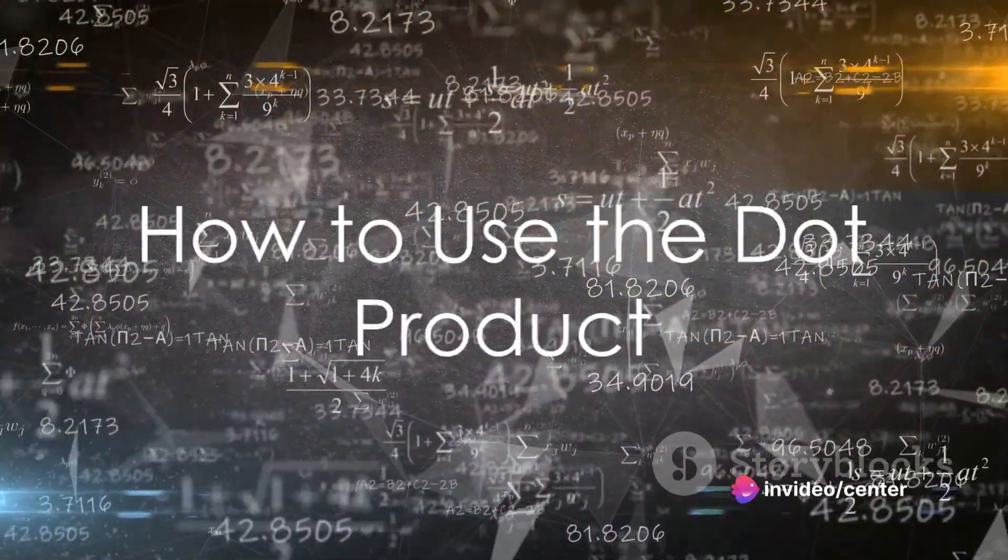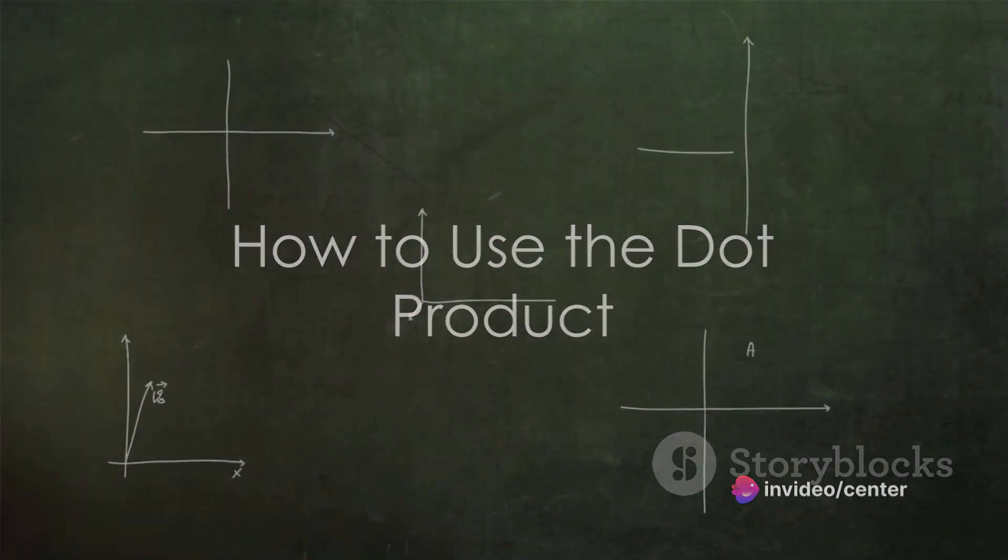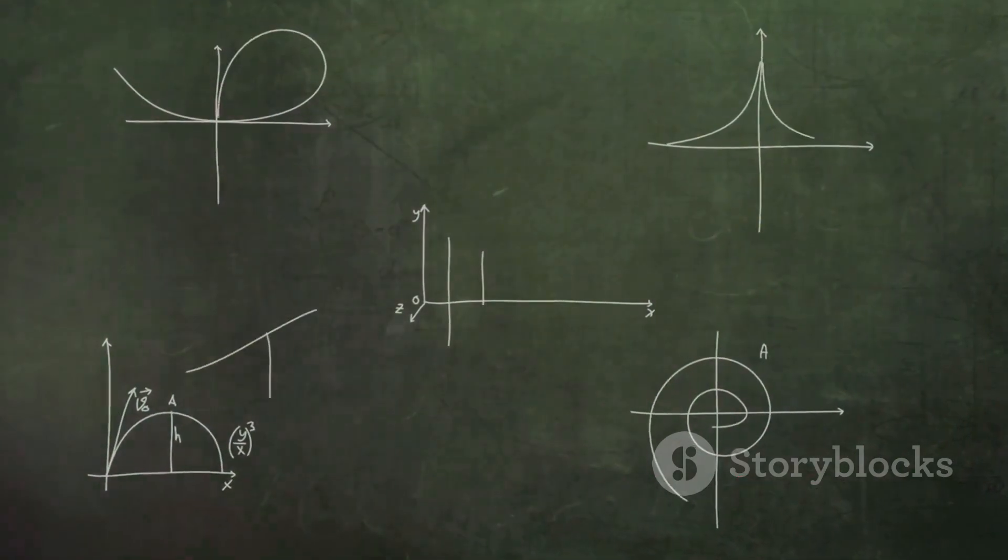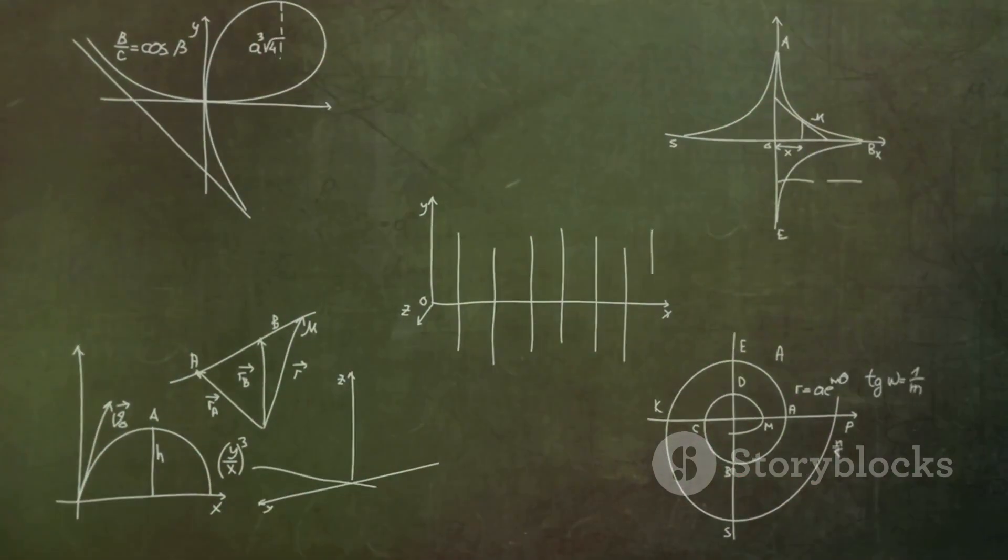So how do you use it? To project one vector onto another, take the dot product of A and B, divide by the dot product of B with itself, and multiply by B.